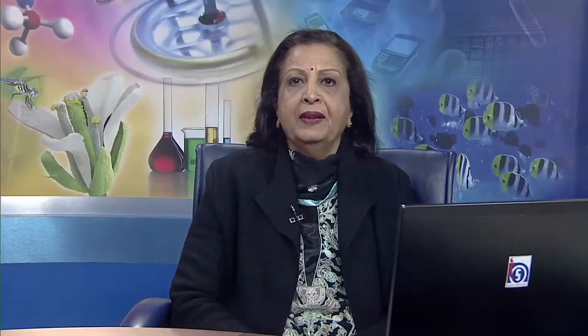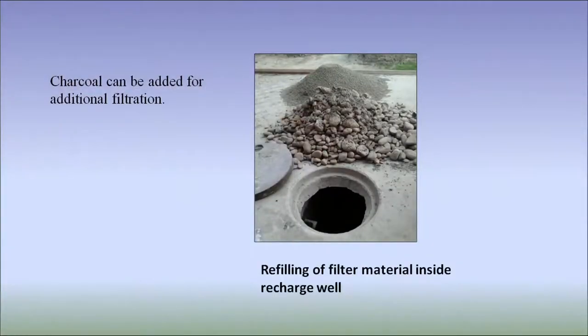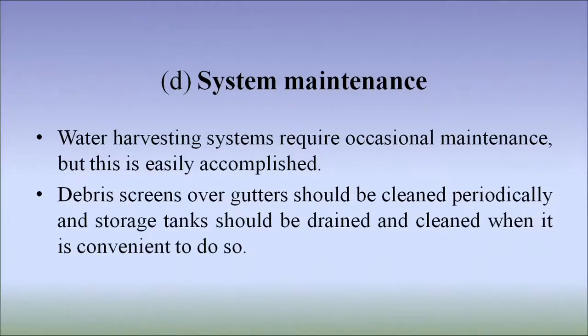Regarding the filter: from the rooftop, through pipes, the water is collected and taken to a storage tank, then sent to the filter unit. The filter is used to remove suspended pollutants from rainwater collected over the roof. A filter unit is a chamber filled with filtering media such as fibre, coarse sand and gravel layers to remove dirt from water before it enters the storage tank or recharge structure. Charcoal can also be added for additional filtration as charcoal removes pollutants.